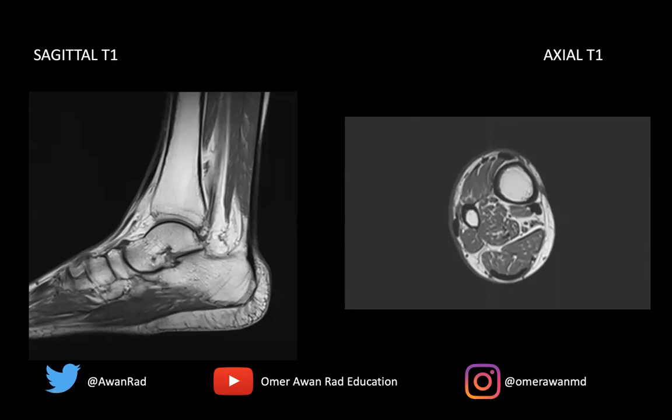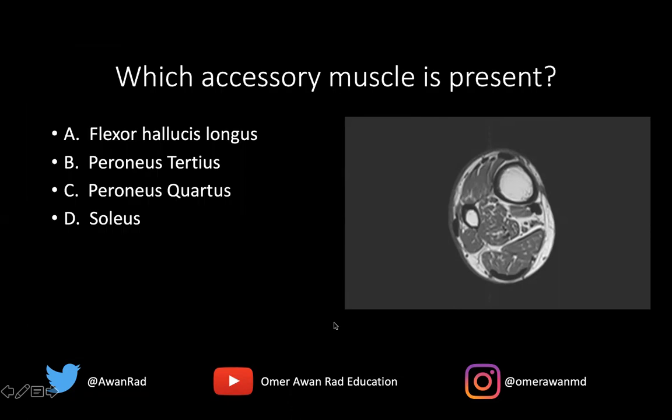Hello everyone, and welcome to MSK Unknown Case Series, Case 39. Today we have a sagittal T1-weighted image through the ankle and an axial T1-weighted image through the ankle. Upon first glance, we don't see any major abnormality. But the question I want to pose to all of you is: what accessory muscle is present here?